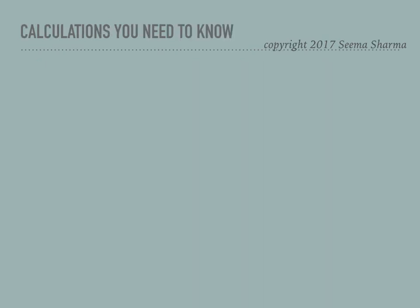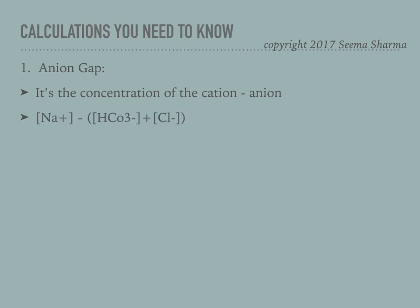The anion gap is the concentration of cations minus the concentration of anions. In practice, we do not use potassium — even though it's a cation — because it's so minuscule it doesn't affect the calculation. So the anion gap = sodium − (bicarbonate + chloride). The normal anion gap is 6–12 mEq/mol; above 12 mEq/mol is a high anion gap.